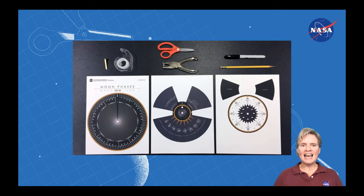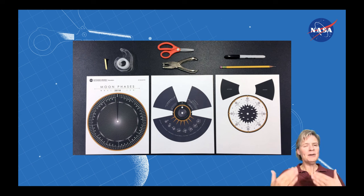To make the calendar you're going to need to print out the template. The template is six pages. It's preferable to print those back-to-back if possible and to use cardstock or a heavier paper, but if you need to just use regular printer paper, not a problem. It'll still work.